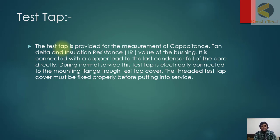Another important thing is the bushing is given with the test tap point. The test tap is provided for measurement of capacitance, tan delta, and insulation resistance values of the bushing. It is a point which is called a tap point during testing.